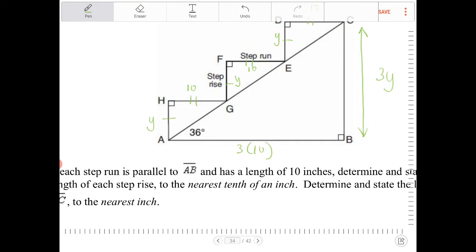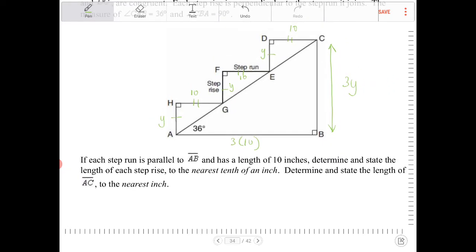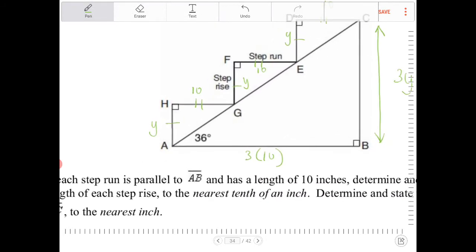So notice now, it says that in the description that AB runs parallel to each of the step runs, right? So that means this is parallel to that. And if that's the case, then that means this angle over here must also be 36 degrees.